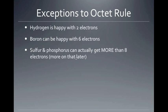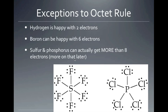There are some exceptions to the octet rule. The main one to focus on is hydrogen — hydrogen is happy with only 2 electrons, which we call the duet rule. Other exceptions include boron, which can be happy with 6 electrons, and sulfur and phosphorus, which can have more than 8 electrons. But the main exception to remember is hydrogen's duet rule.